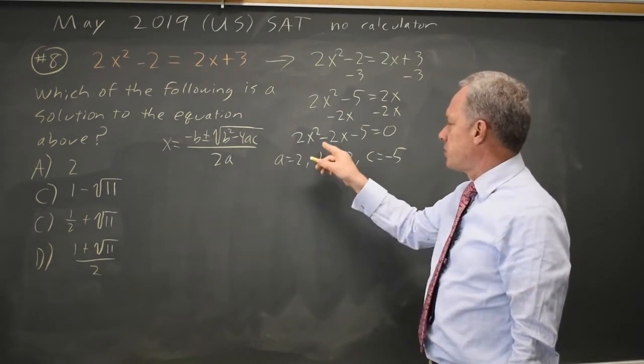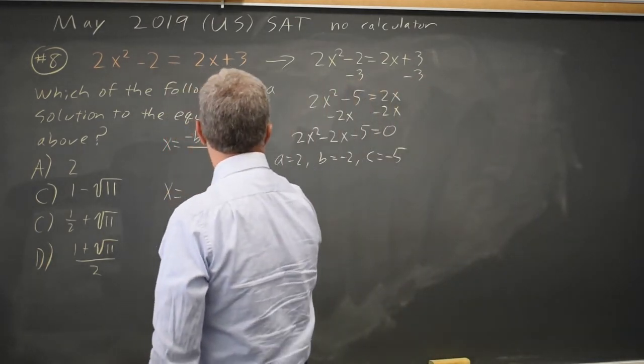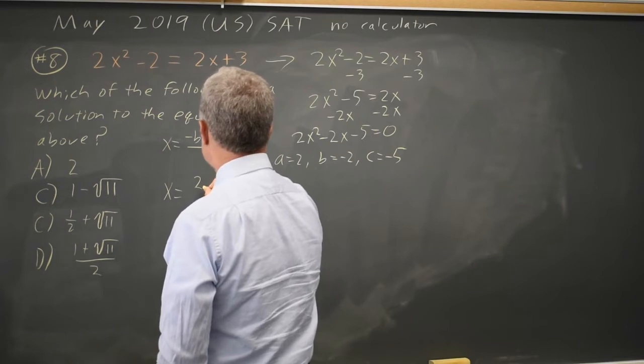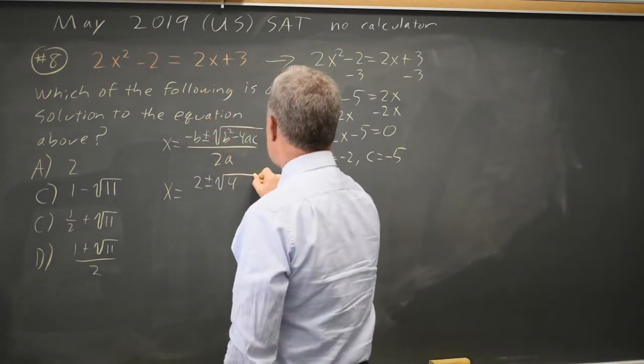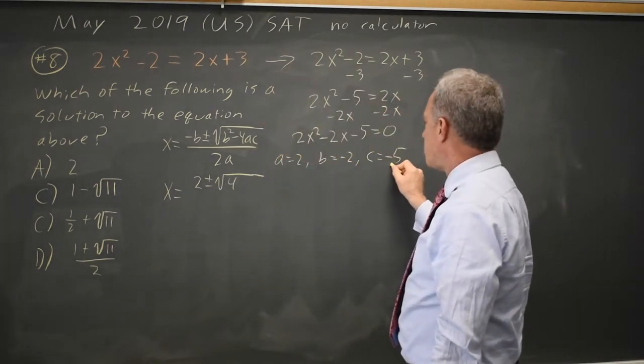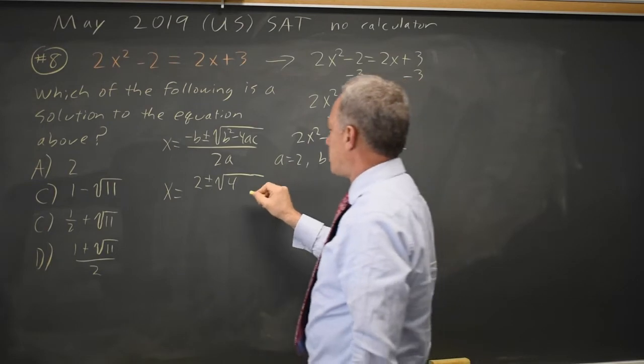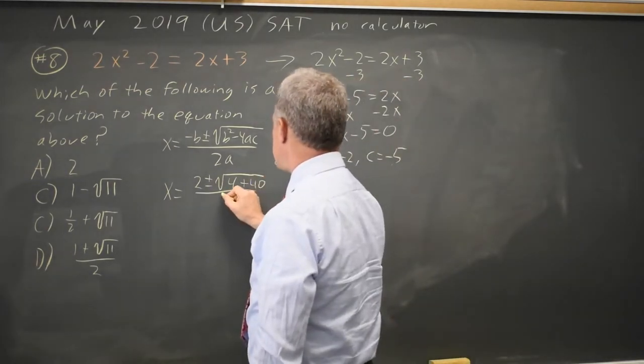So I have x equals negative b, which is minus negative 2, or positive 2, plus or minus square root of b squared, which would be 4. Negative 4ac would be negative 4 times negative 5 is positive 20, times 2 is positive 40. All that over 2a, which is 2 times 2, equals 4.